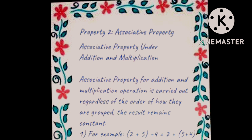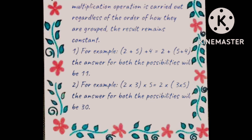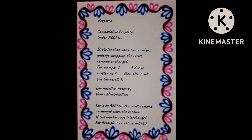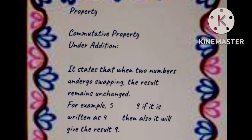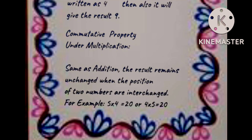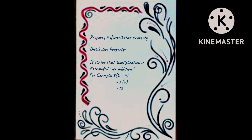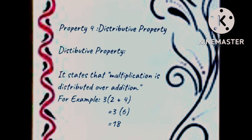The next one is associative property — associative property under addition and multiplication with information under it. Then commutative property: commutative property under addition with information, and commutative property under multiplication with information under it.